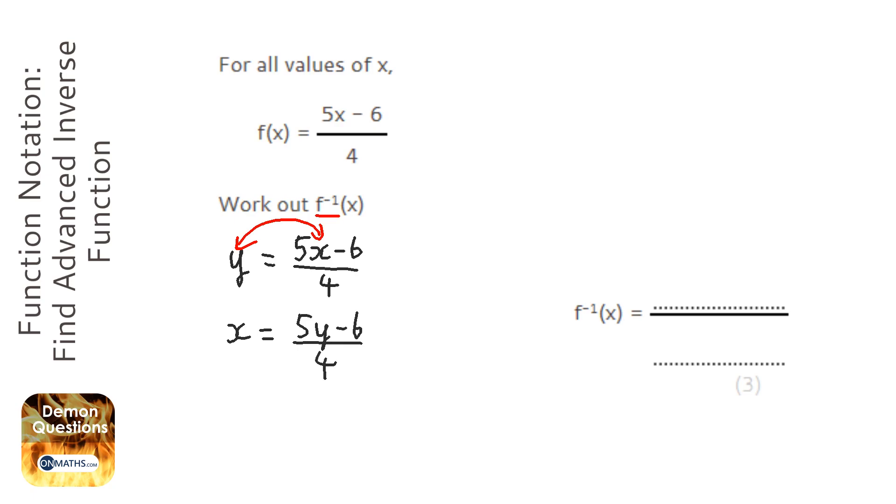When you do that, you just need to rearrange the equation to get y the subject. So I'm going to times 4 both sides first of all, to get rid of the fraction on the right.